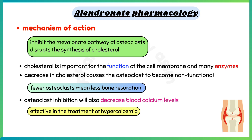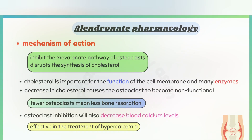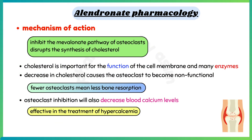Ultimately, fewer osteoclasts mean less bone resorption, because osteoclasts can break down bones to release calcium into the blood. Their inhibition will also decrease blood calcium levels, making alendronate an effective medication in the treatment of hypercalcemia.